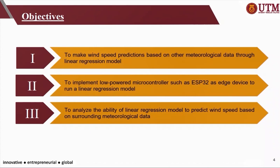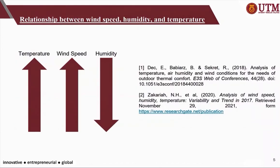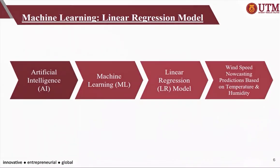You may wonder what a linear regression model is — I will explain it later. So, what are the other meteorological data that may help us to monitor wind speed? Some studies show that wind speed will increase with the increase of temperature, and a fast wind speed will result in low air humidity. With the proportional relationship between wind speed, temperature and humidity, we can use a linear regression model to make now-casting predictions of wind speed based on temperature and air humidity.